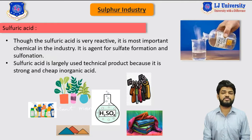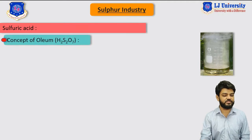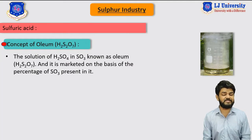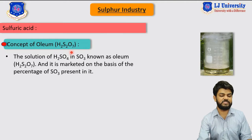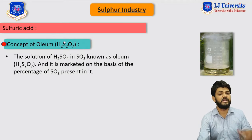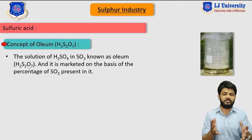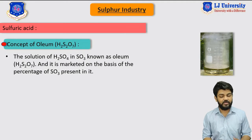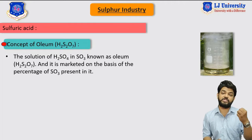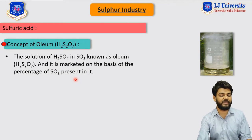There is one more term associated with sulfuric acid and that is oleum. Oleum can be represented as H2S2O7, which is its chemical formula or empirical formula. The solution of H2SO4 in SO3 gas is known as oleum. When SO3 gas mixes with H2SO4 it produces oleum, so oleum is the mixture of sulfuric acid and SO3 gas, and it is marked on the basis of the percentage of SO3 present.